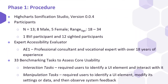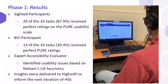Phase 1 was performed using HSS version 0.0.4 and included 13 participants and one expert accessibility evaluator. Study participants were instructed to complete 33 benchmarking tasks, broadly categorized as either interaction tasks or manipulation tasks. The expert evaluator was instructed to critically interrogate the HSS without following the benchmarking tasks, testing the limits of the software to identify pain points. 29 of the 33 tasks received perfect ratings on the pure usability scale for the sighted group, indicating high usability. However, only 13 of the 33 tasks received perfect ratings for individuals who identified as blind or visually impaired. We thematically analyzed all issues against Nielsen's 10 UX heuristics to understand how to continue improving the HSS.